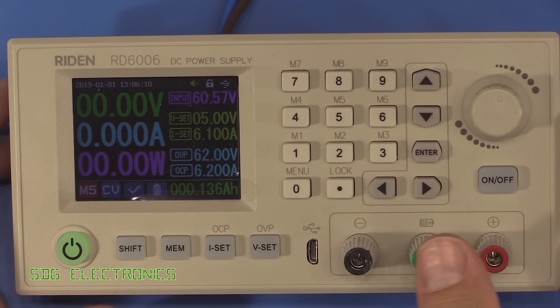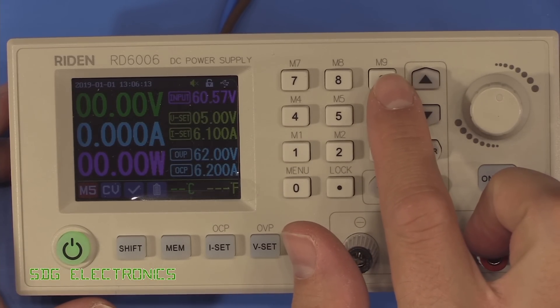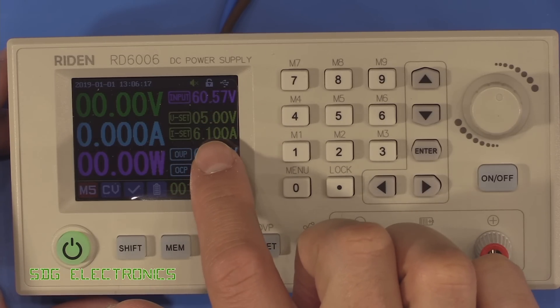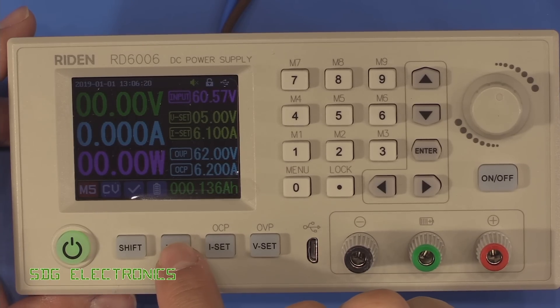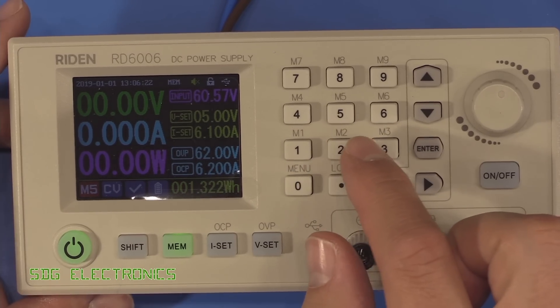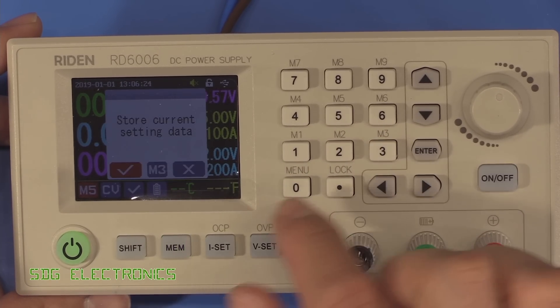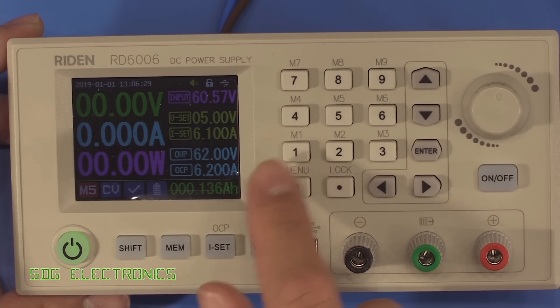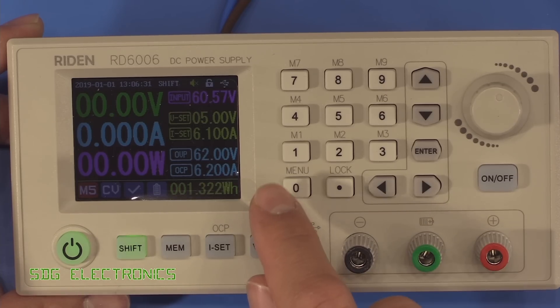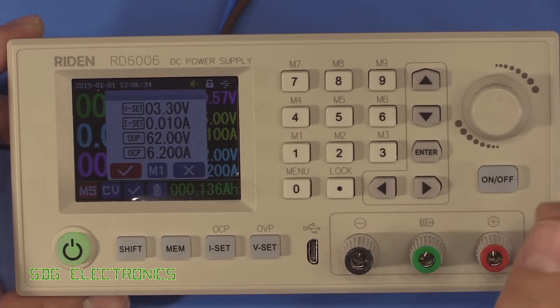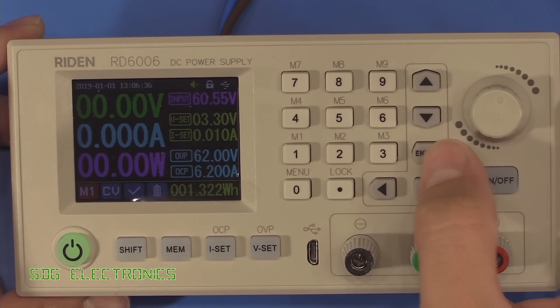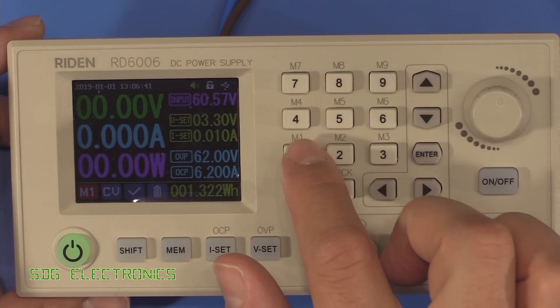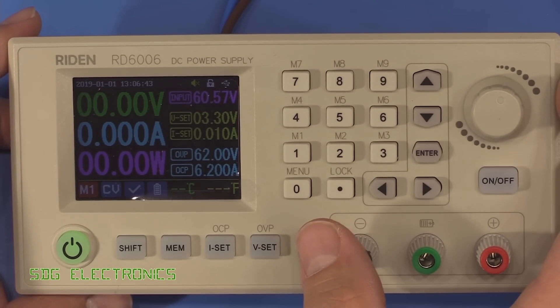Right, so in terms of other features on here, you can see we've got labeled M1 all the way up to M9, and these are some presets. So let's say we want to save this 5 volt and 6.1 amp setting. We can press MEM, and then let's say we want to store it in M3. It'll ask us if we want to do that, and we can go to, for example, M1 where I previously have already put 3.3 volts and a current setting of 0.01. So that's quite handy to have up to nine presets available.